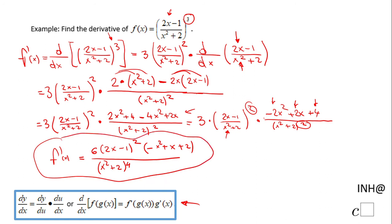Of course, you may want to check whether the expression (negative x squared plus x plus 2) can be factored further — that would help if you want to find the zeros of f prime of x. If you enjoyed this video, don't forget to click the like button and come back to C-Squared for more help. Thank you.